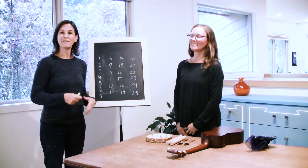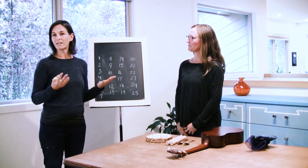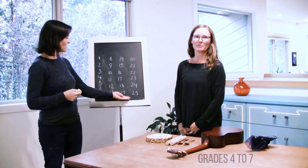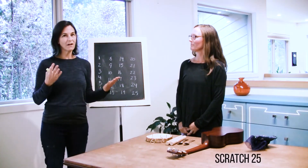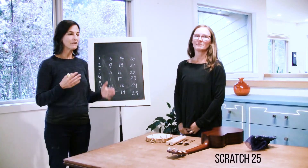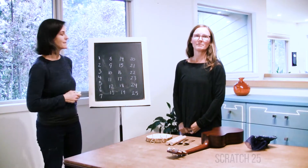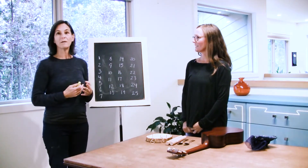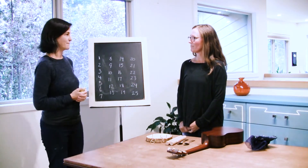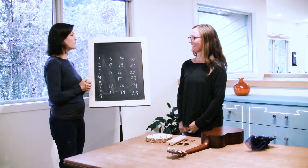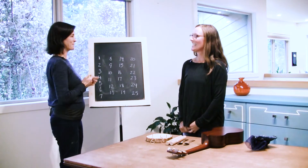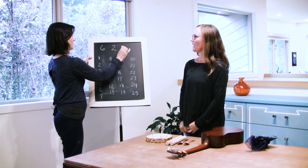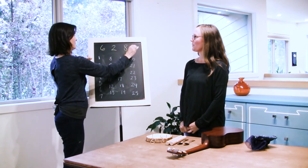This is a really fun activity for students who are in grade four, five, six, seven, and for our purposes it's called Scratch 25. You could call it Scratch 10, 20, 30 — whatever number you choose. So here's the concept: I'm going to ask Rebecca to choose four numbers between one and nine. Any four numbers between one and nine. Six, two, eight, three.